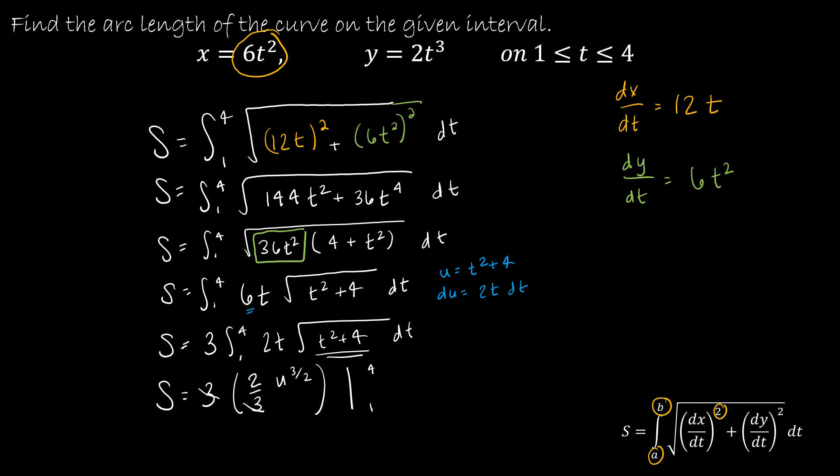So the 3s will cancel out, and u is actually (t² + 4)^(3/2). So really what I have left is 2 times (t² + 4)^(3/2) from 1 to 4.